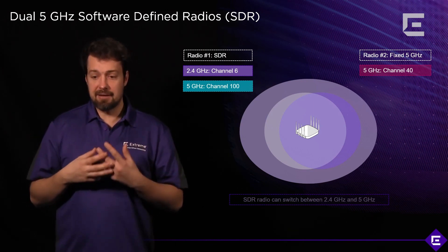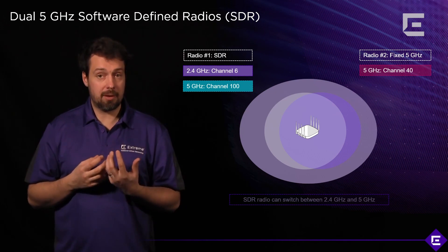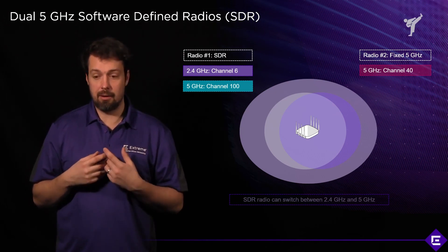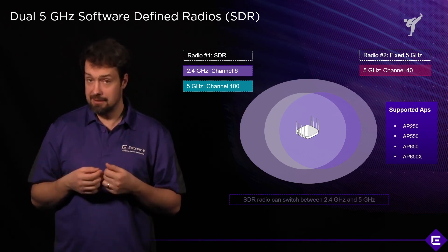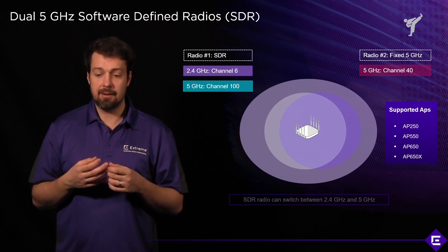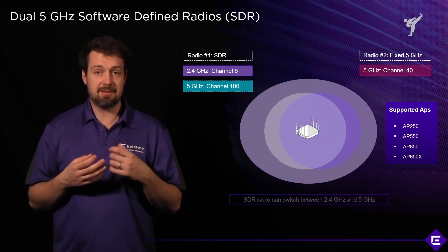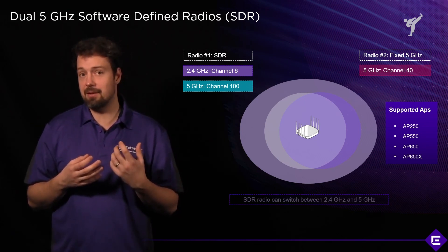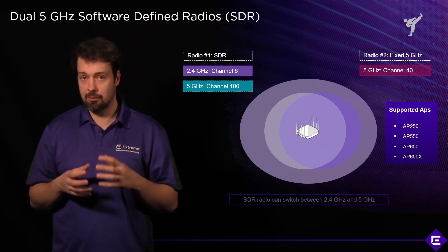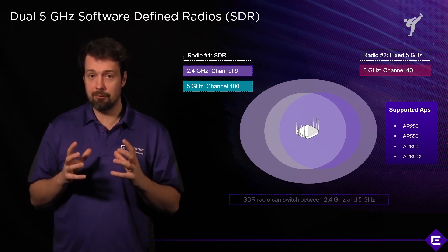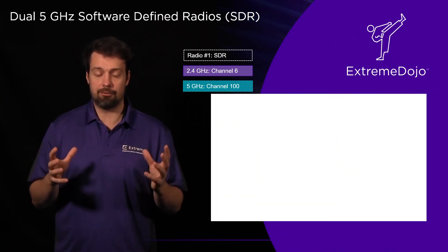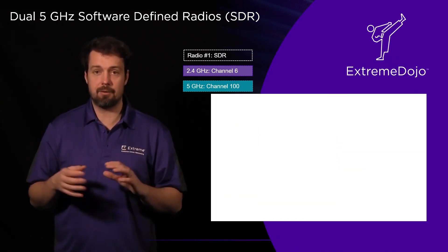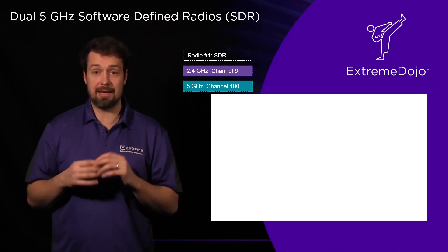The access points that currently support dual 5 GHz mode are the AP250, the AP550, and the AP510C and AP510CX. Those are the dual 5 GHz platforms, and they all offer the benefits of running a dual 5 GHz Wi-Fi network.